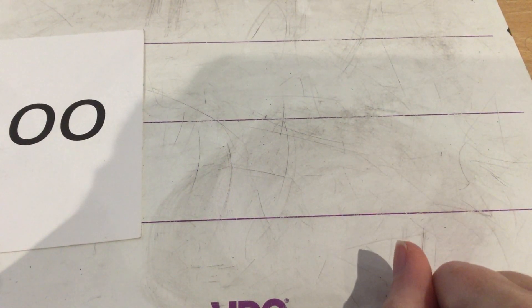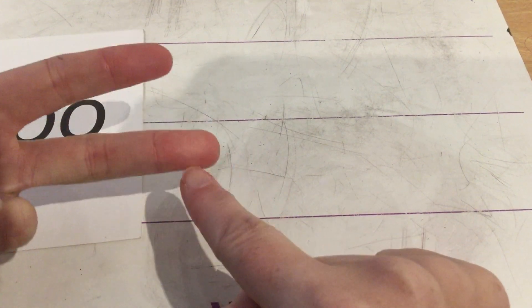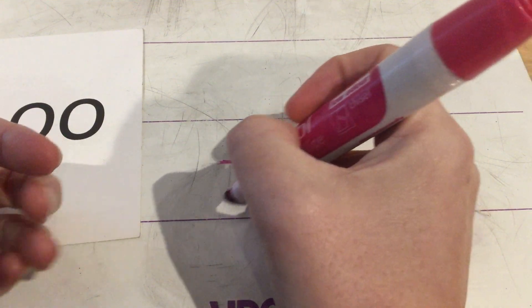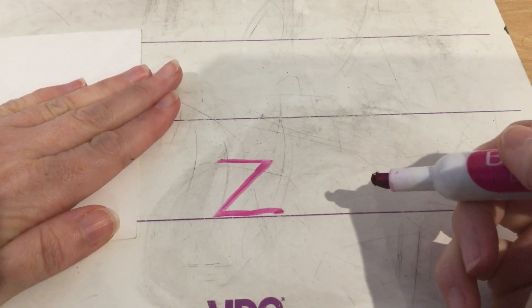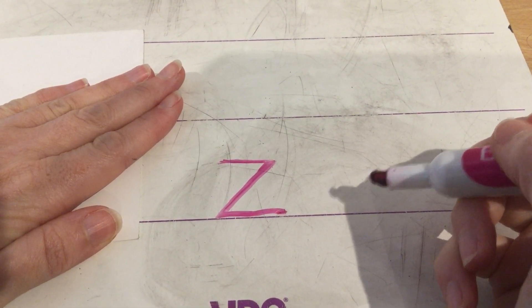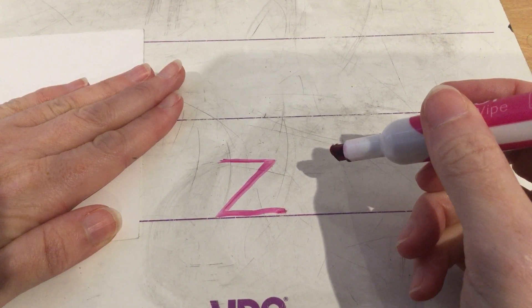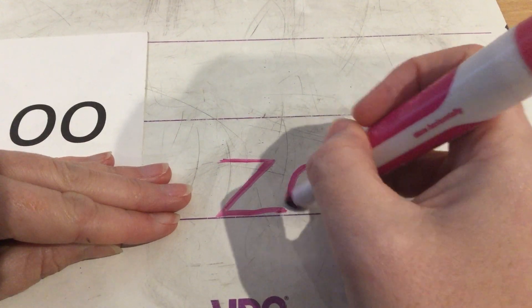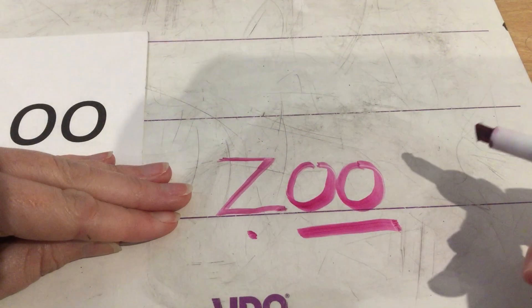So our next word is zoo. Can you say zoo? We need two Fred Fingers. Z-oo. Zoo. Now we need a Z sound. Z-Z. Then we need, I'm going to cover it up this time because we need the OO sound and I want to see if you can do it without me. Have a go. Let's see if you were right. You need an O and an O. Z-oo. Zoo.